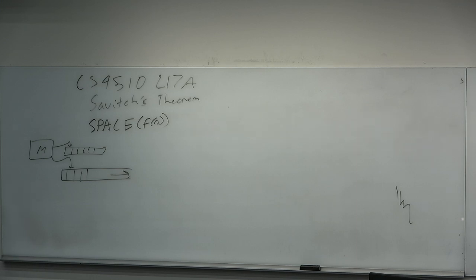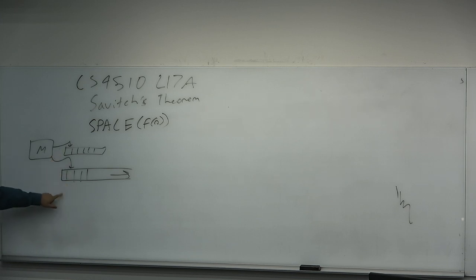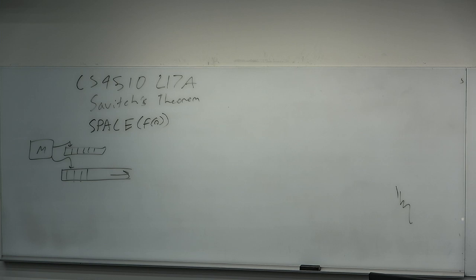Defining configurations of the machine is slightly different. You have to encode not just the state Q0, the work tape contents, but also the position on the input tape, the symbol being read, the whole tape contents, and the location of the work tape head. One of the reasons space complexity is fascinating and also unfascinating is the fact that it's not a class that measures simultaneously the space and time complexity.